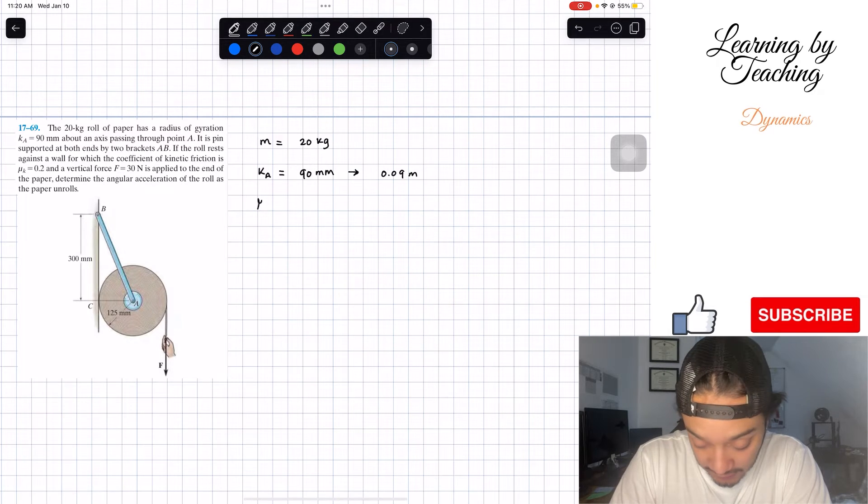We're also given mu sub k, our coefficient of friction, 0.2. And lastly, we have our force F equal to 30 newtons.